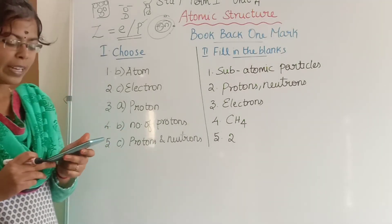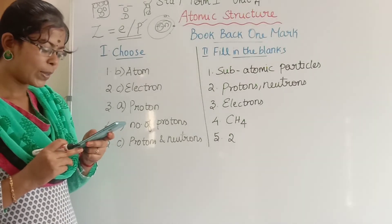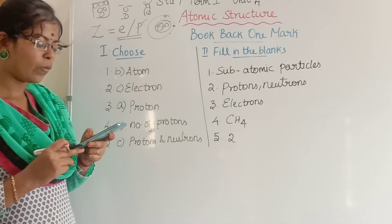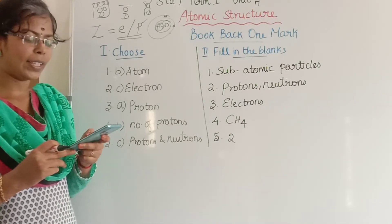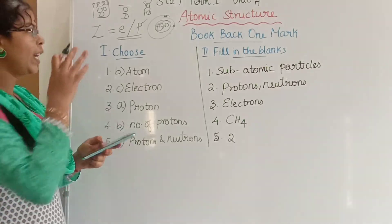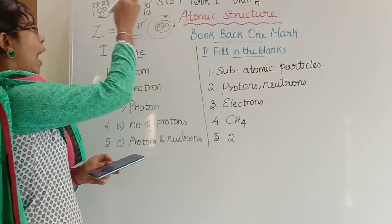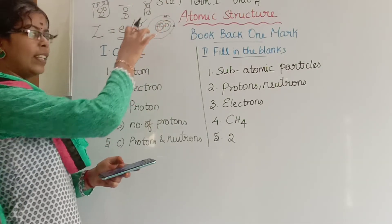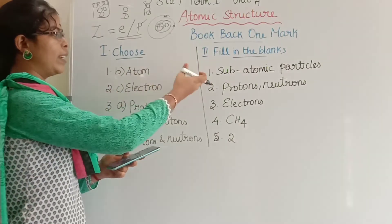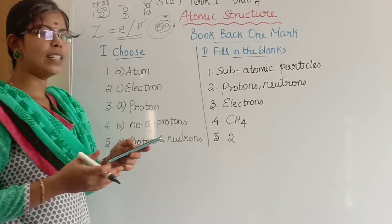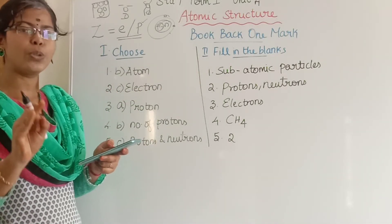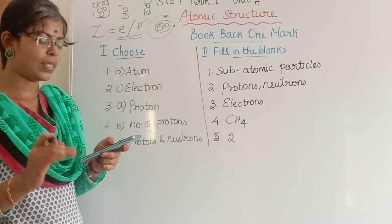Second section: fill in the blanks. First question: the smaller particles found in an atom are dash. Matter is made up of atoms, and atoms are made up of subatomic particles. The answer is subatomic particles — they are protons, neutrons, and electrons.